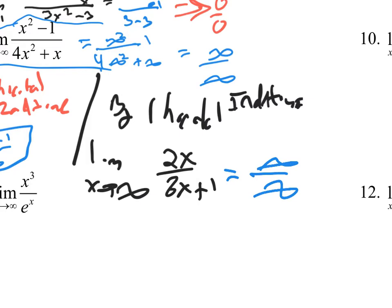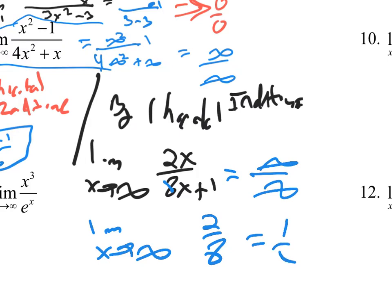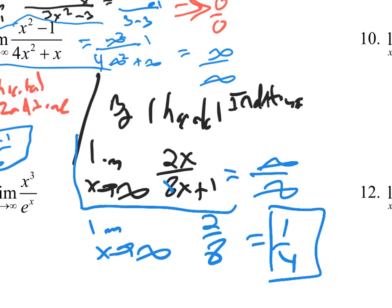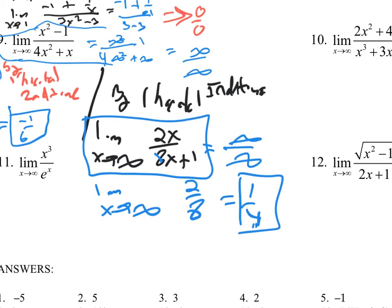L'Hôpital's Rule again — limit as x approaches infinity. Derivative of 2x is 2, over derivative of 8x plus 1 is 8. So the answer is 2 over 8, which is 1/4. This is the same problem as finding a horizontal asymptote — L'Hôpital's Rule finds it. Let's graph this one to prove it.